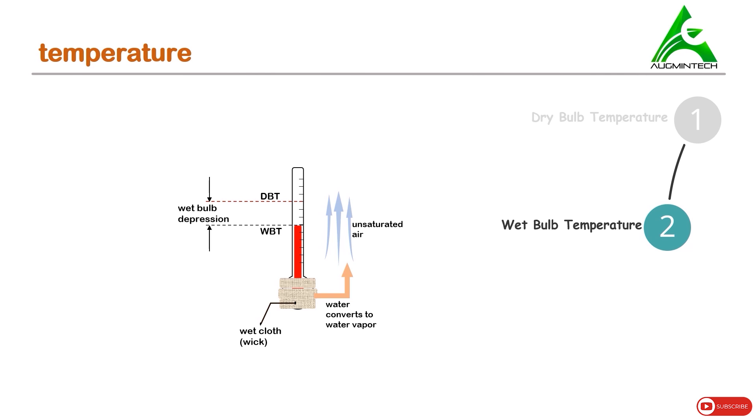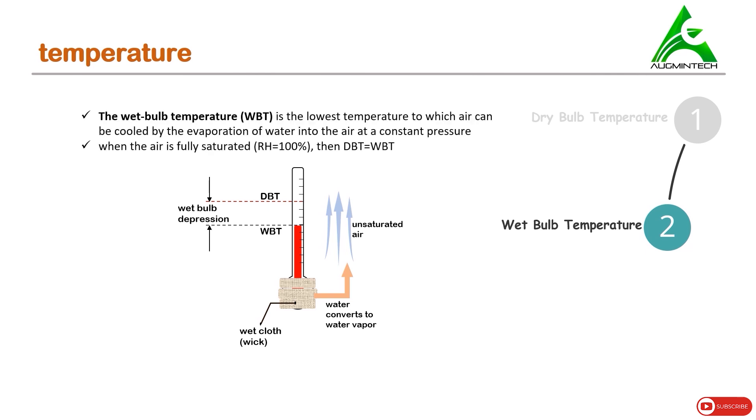It is important to note that the air that passes around the thermometer is unsaturated, otherwise the mercury in the thermometer won't drop and the reading of wet bulb temperature equals to dry bulb temperature. So the wet bulb temperature, also known as WBT, is the lowest temperature to which air can be cooled by the evaporation of water into the air at constant pressure.